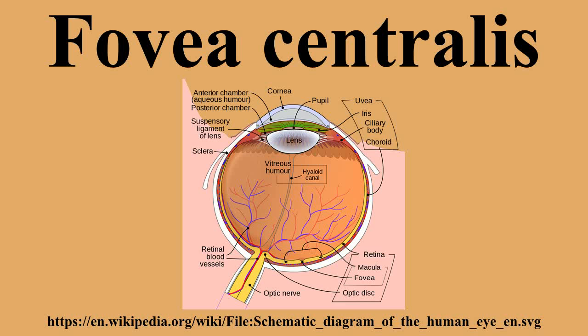This is also accompanied by a lower density of blue cones at the center of the fovea. The maximum density of blue cones occurs in a ring about the fovea. Consequently, the maximum acuity for blue light is lower than that of other colors and occurs approximately one degree off-center.